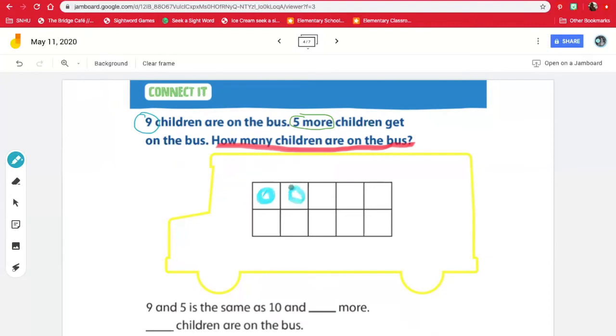So let's draw our nine. One, two, three, four, five, six, seven, eight, nine. So we have nine.